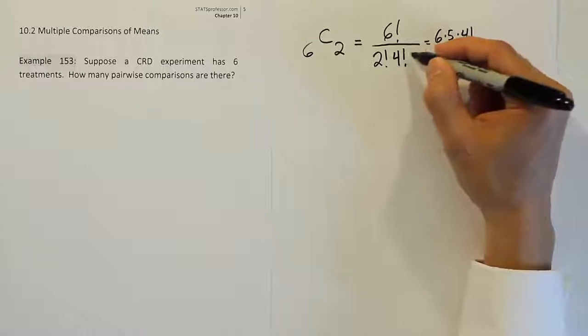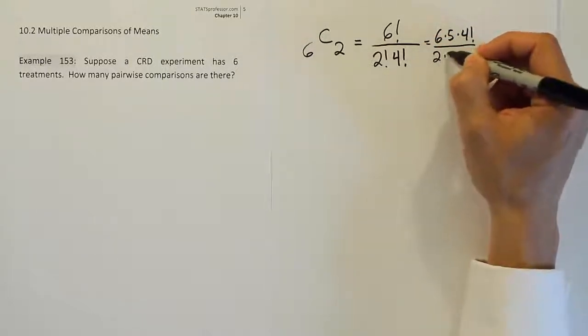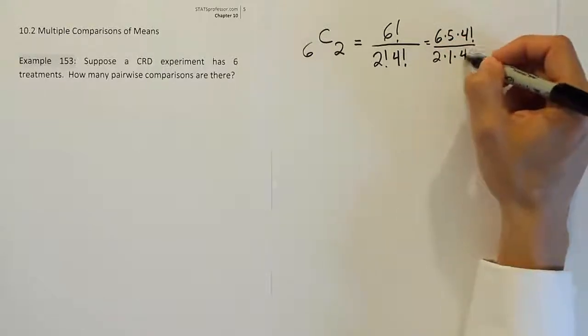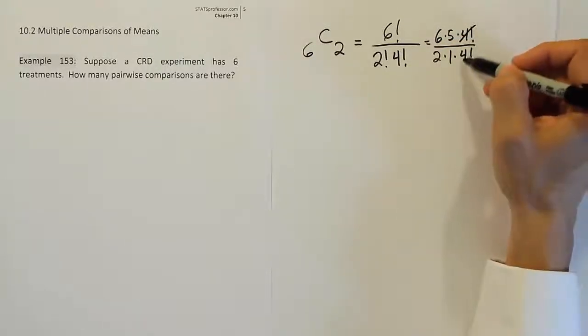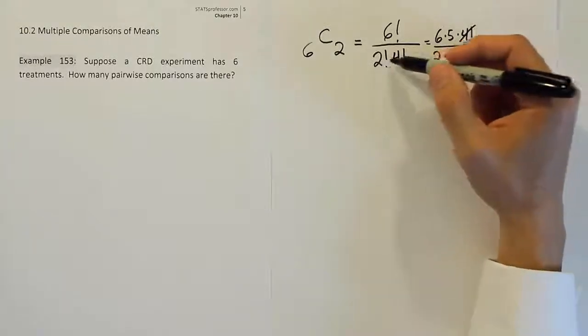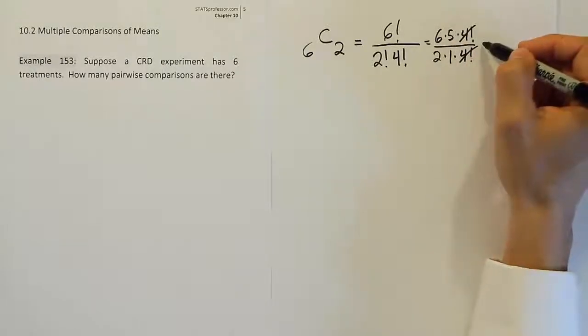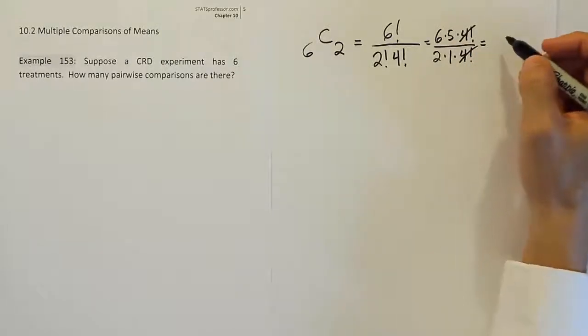The two factorial we're just going to do two times one times this four factorial. We stop there because these will cancel each other out and then what we end up having is the bottom here which is two and then we have the top which is six times five or thirty so the final answer of course is going to be 15.